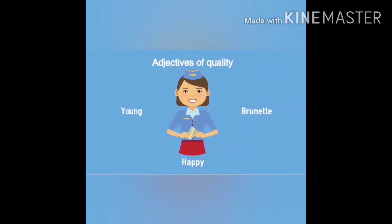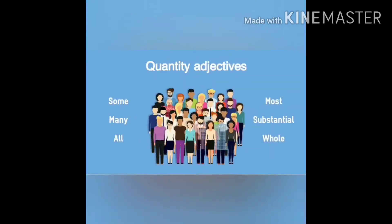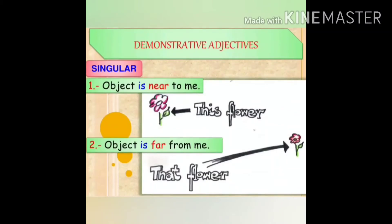Next we have demonstrative adjectives. Demonstrative adjectives are used to point out a specific noun or pronoun. The four demonstrative adjectives are: this, that, these, and those. They indicate where the noun or pronoun is. For example: 'this argument is convincing' and 'that girl is very tall.' Here the nouns 'argument' and 'girl' are pointed out by the demonstrative adjectives 'this' and 'that' respectively.